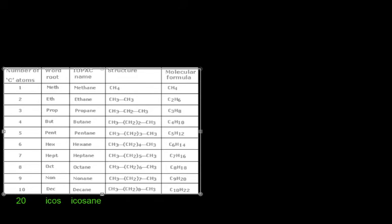By knowing 1 to 10 and 20, you can name any lengths in between 1 and 29. Simply because 11 is going to be undecane, because 10 is decane. 21 is going to be uneikosane, because 20 is eikosane. So hopefully that shouldn't be that bad.